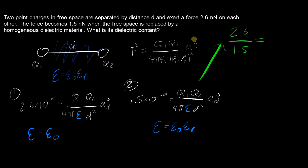So you're going to get one over epsilon not coming from here, because here we said epsilon is epsilon not, and that's all going to be over one over epsilon not epsilon r from here.